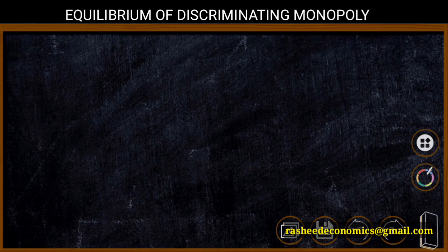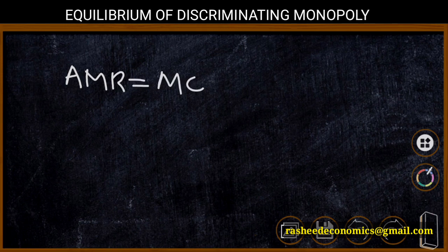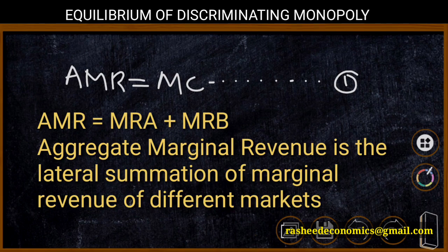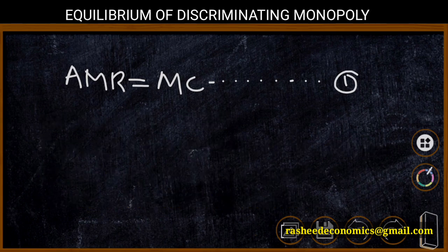We know that the basic condition of equilibrium in all markets is MC equal to MR. Here, the producer is getting marginal revenue from two markets. Therefore, the initial condition of equilibrium is AMR — aggregate marginal revenue — must be equal to marginal cost. This aggregate marginal revenue is the marginal revenue of A plus marginal revenue of B, or the lateral summation of marginal revenue curves of different markets. On the basis of this equilibrium, we can identify the total quantity to be produced by the monopolist.